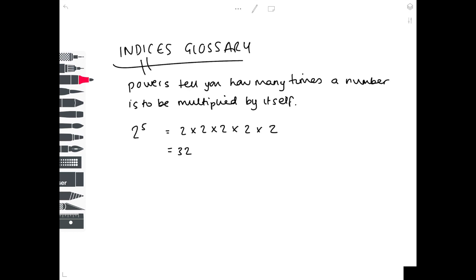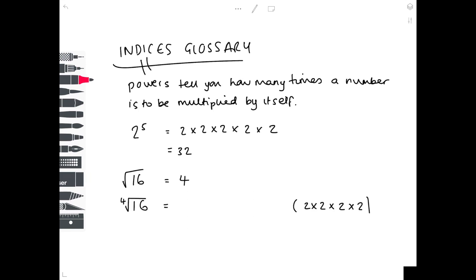The reverse of raising to a power is taking a root. For example, the square root of 16 — you have to work out what number is multiplied by itself to get 16, and that answer is 4. So the square root of 16 is 4.